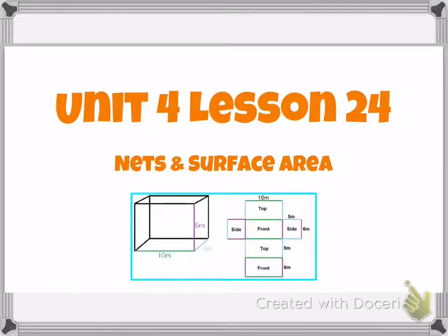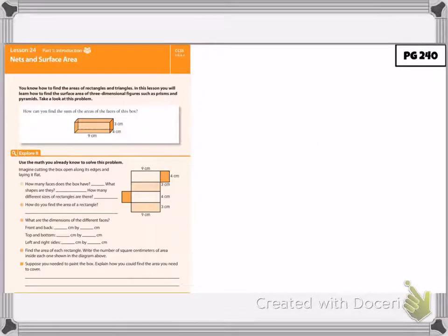Today we're going to start unit 4, lesson 24, and it's over nets and surface area. So we're finding the area of the entire outside of a shape. Our first question says: how can you find the sum of the areas of the faces of this box? We're going to pretend that we cut this box open along its edges and lay it out flat.